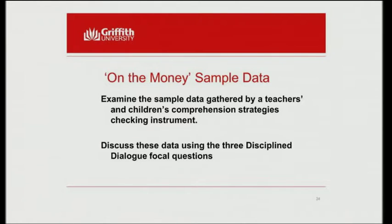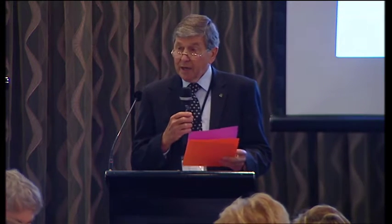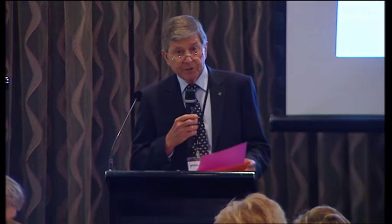I'm going to provide you with a brief discussion on some sample data. If you open your folders, you'll find a purple sheet — a teacher's comprehension check — which was actually run at this school, followed by an orange sheet, which is the children's comprehension check. Part of their strategy was professional learning for teachers and explicit exposure to all aspects of comprehension in these year levels. I'd like you to examine those two pages for the data drawn from this evaluation and have a conversation using your three discipline dialogue questions.